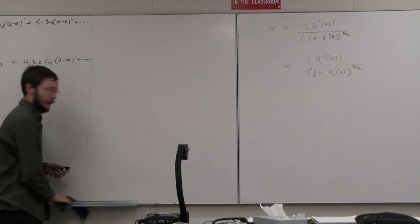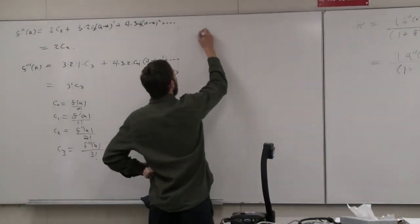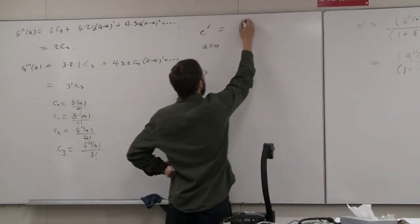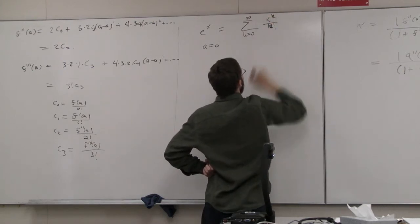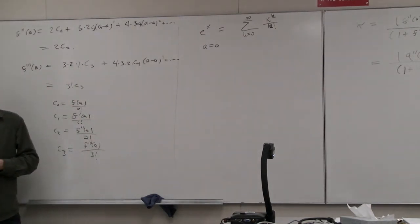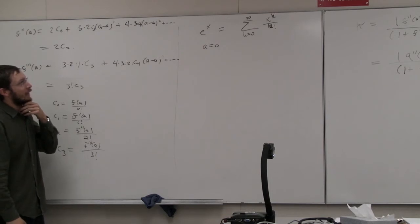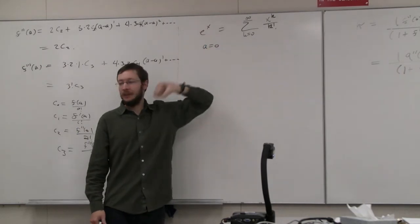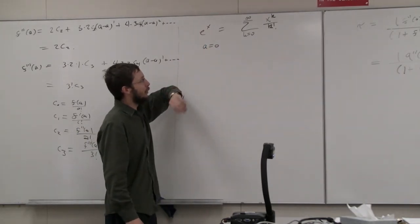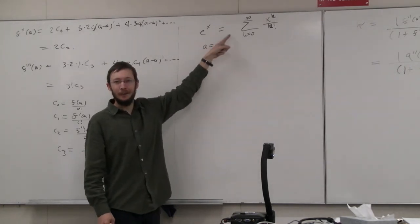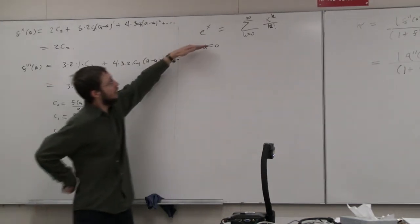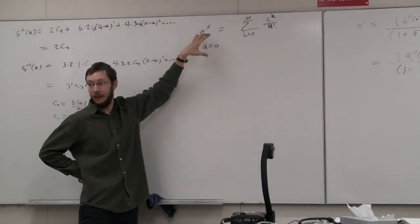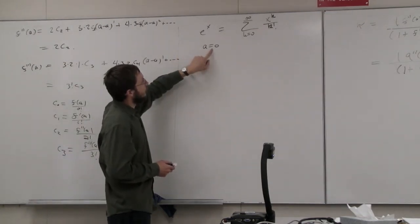The most important Taylor series — hopefully you know this one — is e to the x, expanded around a equal to zero. It's the sum from k equals zero to infinity of x to the k over k factorial. A book by Walter Rudin opens with the sentence, 'This is the most important function in mathematics.' Definitely memorize that one. We're going to use it extensively in this class — the entire course is based on differential equations using this as the tool to solve them.